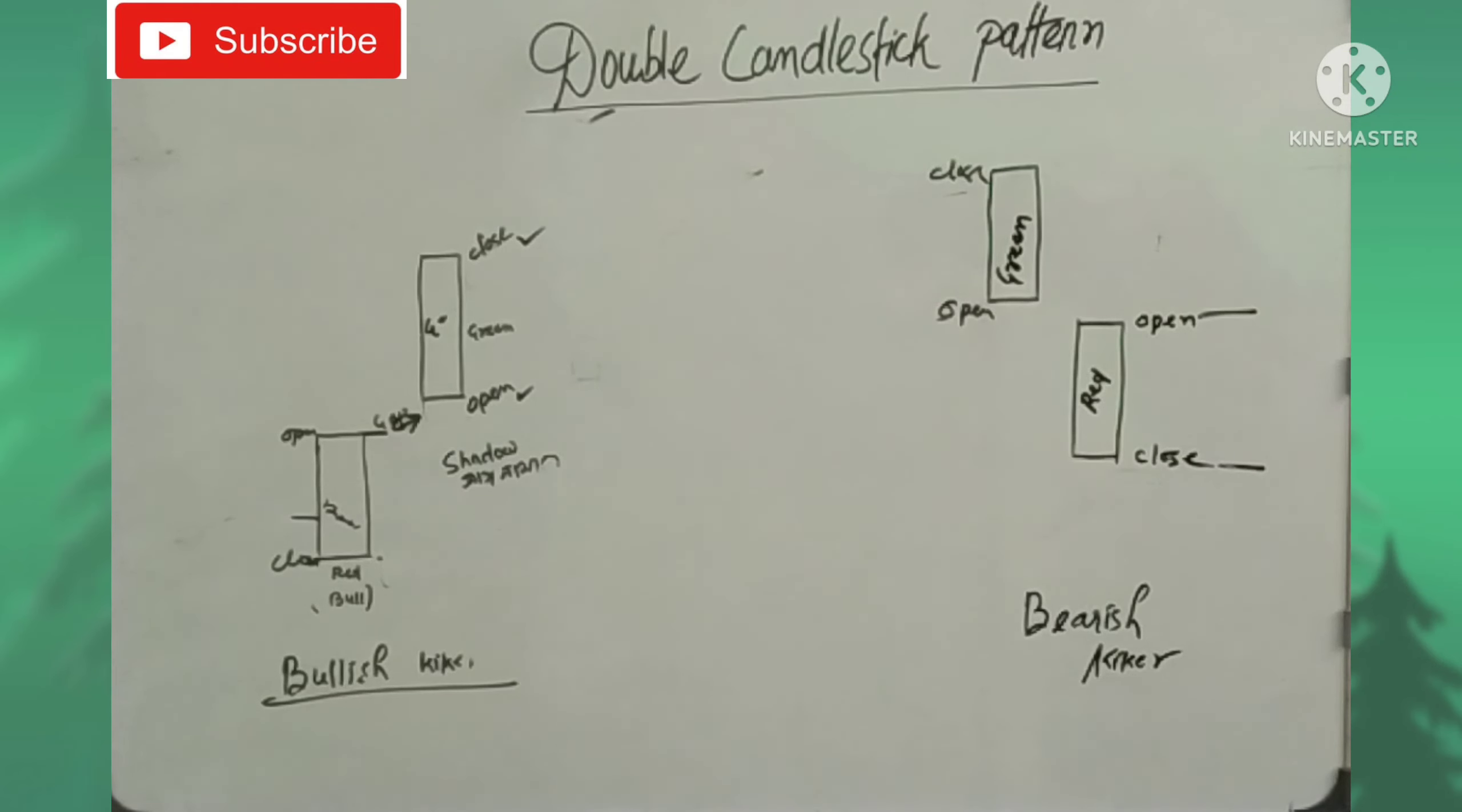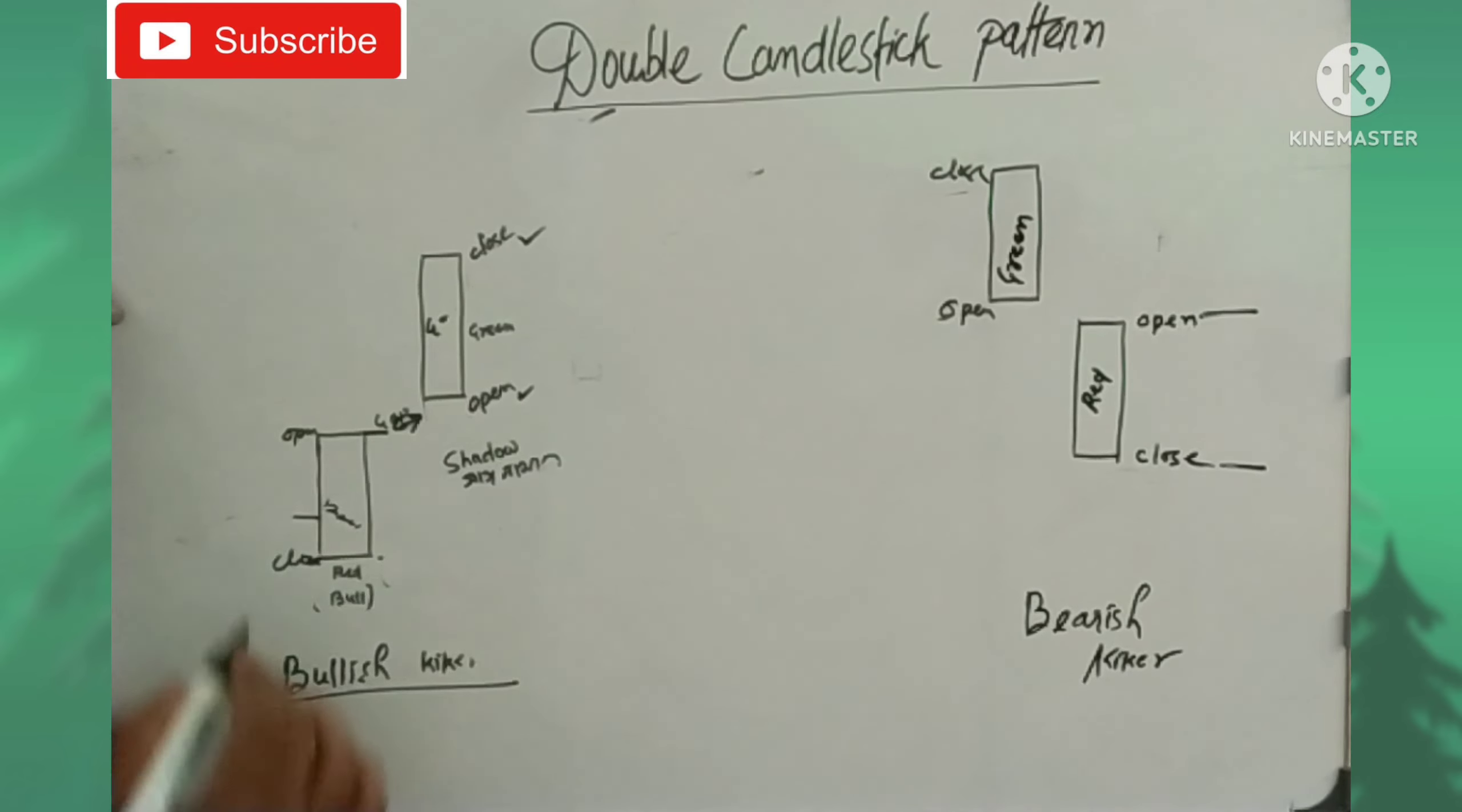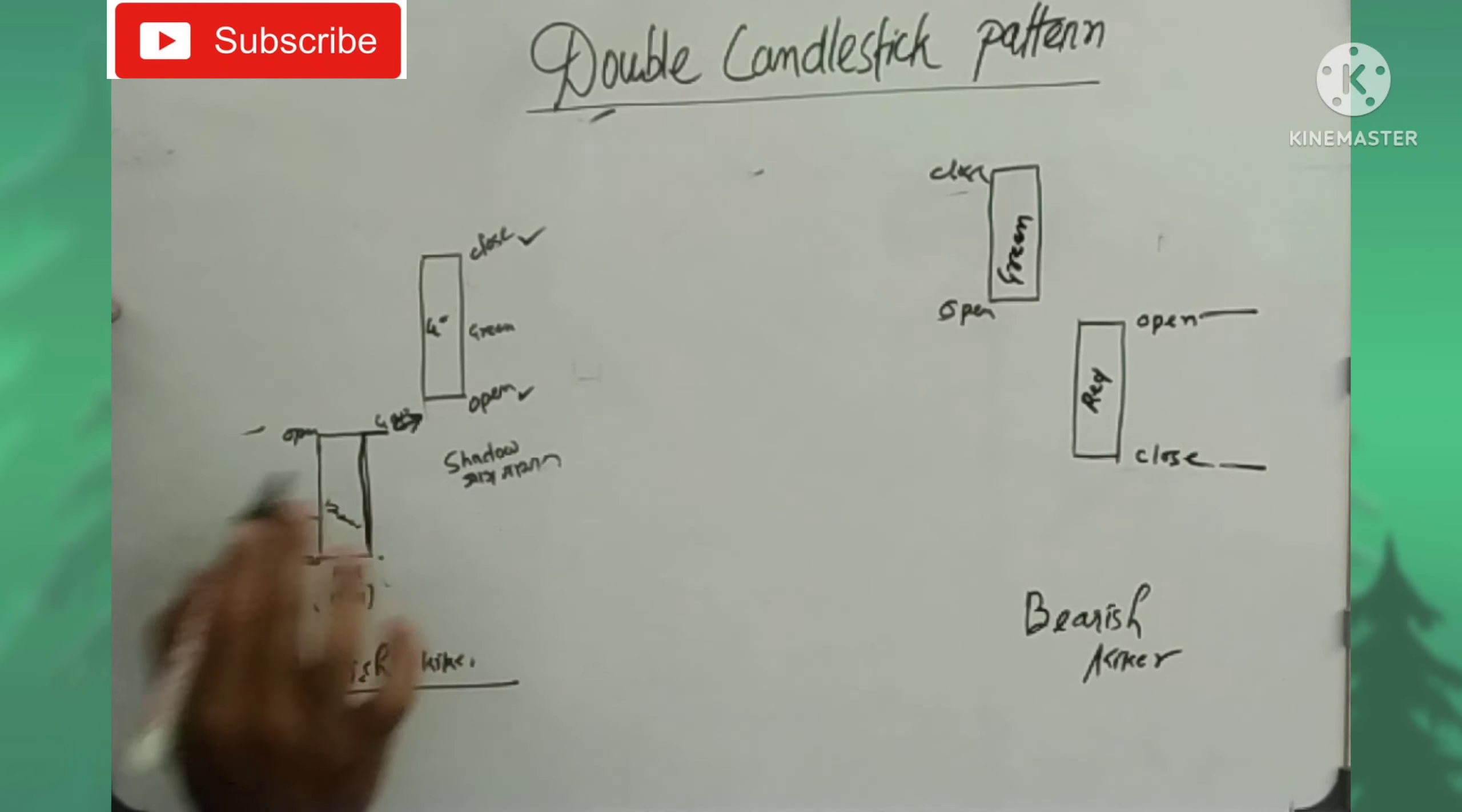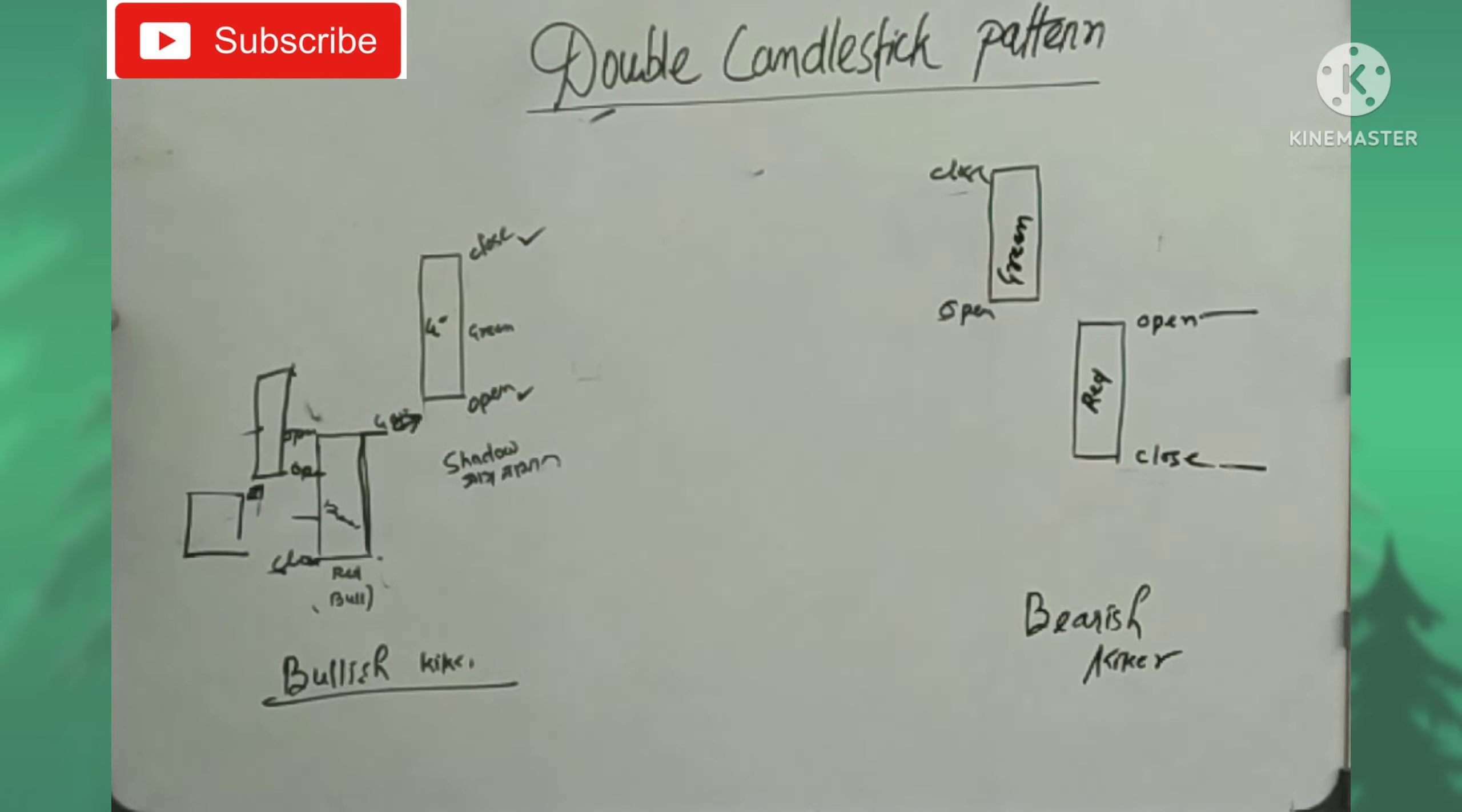The candlestick patterns have bullish and bearish forms. Every candlestick has open and close prices. This red candle represents bearish movement. This green candle represents bullish movement. The candle shows whether the price opened or closed higher.